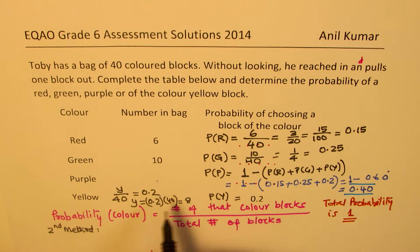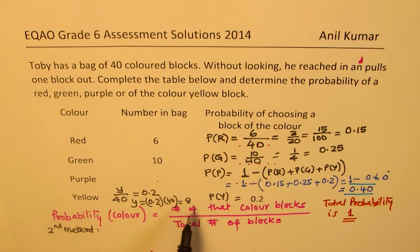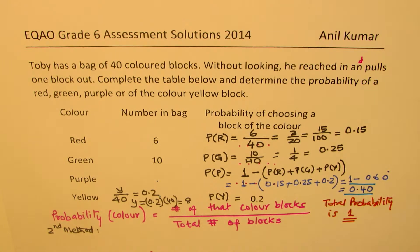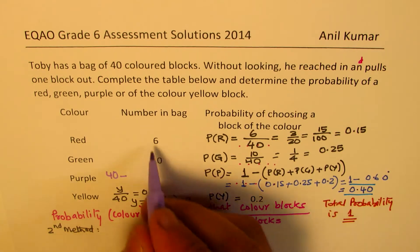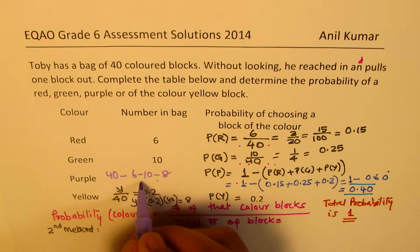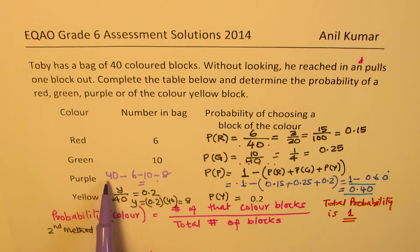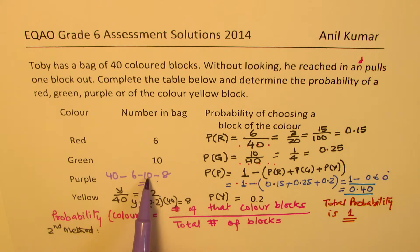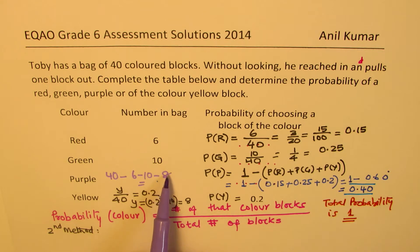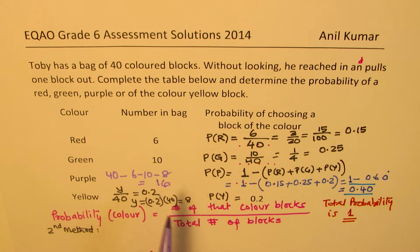When you multiply, you get 8 — since 0.2 times 40 is 8. So we know there are 8 yellow blocks. Total is 40, so the purple should be 40 minus 6 minus 10 minus 8. From 40, take away 6 gives 34, take away 10 gives 24, take away 8 gives 16.